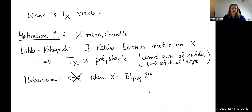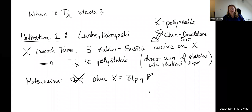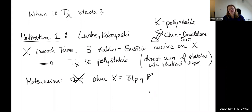Here is some motivation relating to this workshop. First, when X is Fano and smooth, Lübcke and Kobayashi showed that if there exists a Kähler-Einstein metric on X, then TX must be poly-stable — a direct sum of stable sheaves with identical slope. Matsushima showed that when X is the blow-up of two points on P2, TX is poly-stable but there need not be a Kähler-Einstein metric, so this is only a necessary condition. By Chen-Sun, the existence of a Kähler-Einstein metric is equivalent to X being K-polystable. So the stability of the tangent bundle gives a necessary criterion for X to be K-polystable.